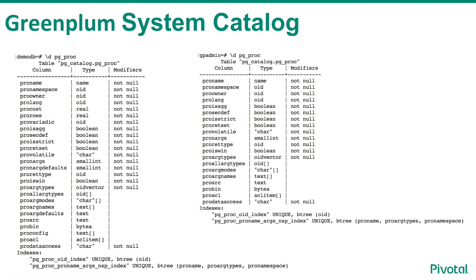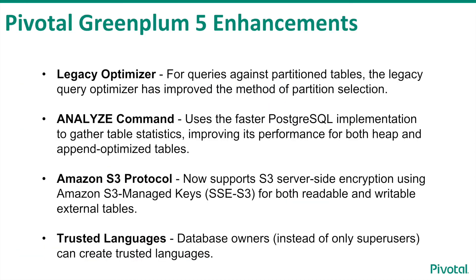In this example, on the left is the updated table definition for the system catalog table pg_proc. On the right is the older table definition in Greenplum 4.3. Pivotal Greenplum 5 brings with it a number of new features and enhancements that extend the core functionality of the analytical platform, which do not require changes or modifications to existing applications or SQL code.